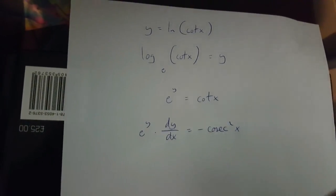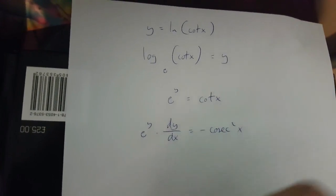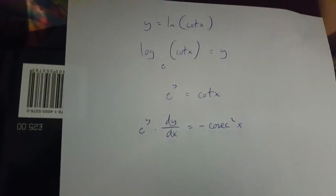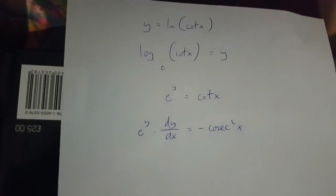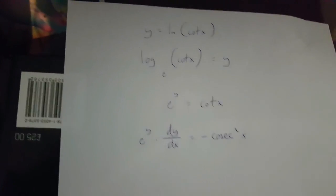So, this means that to isolate dy over dx, all I have to do now is divide both sides of this equation by e to the power of y.